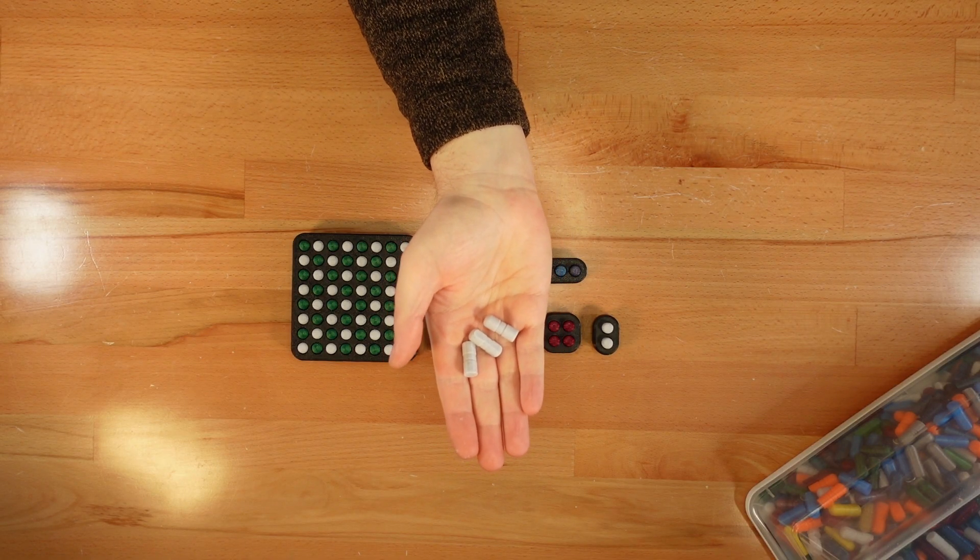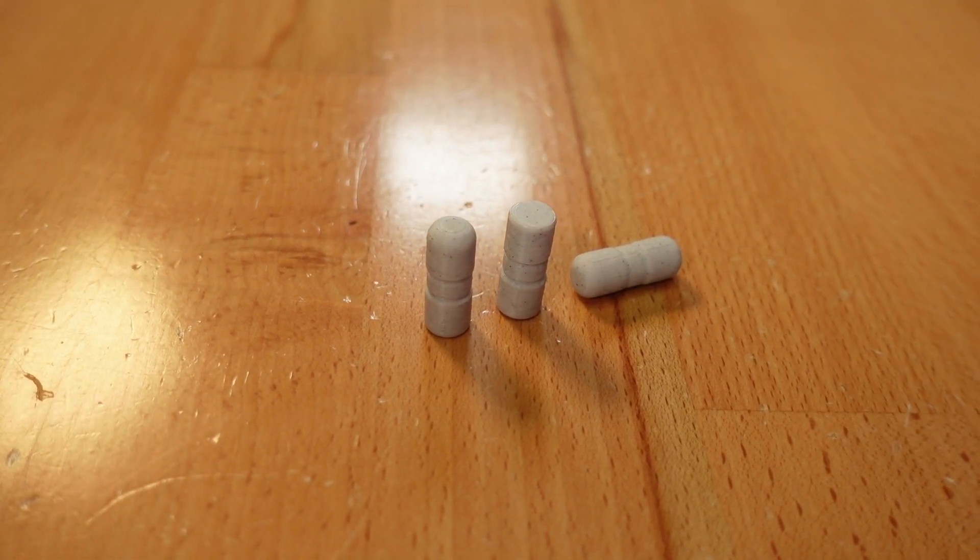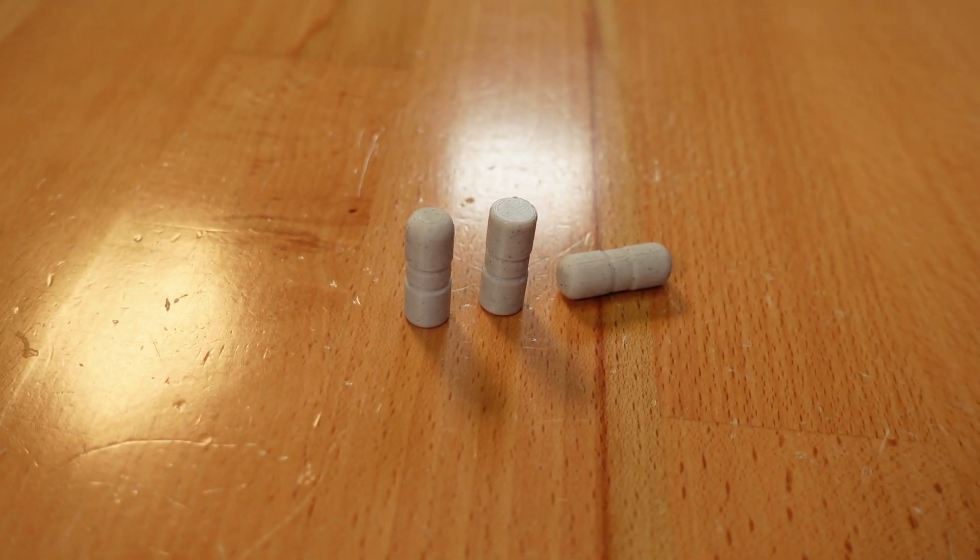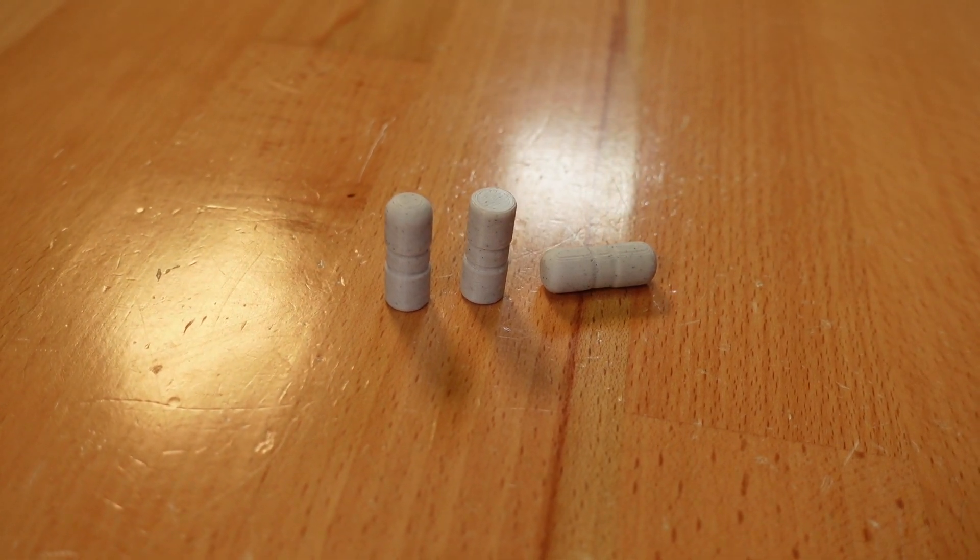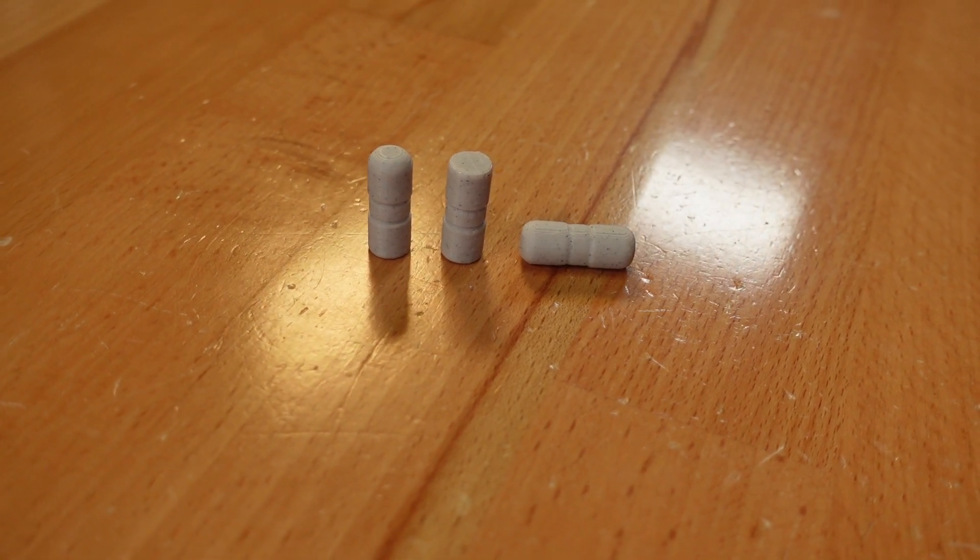The buttons are available in three styles. The default is round on top and flat on the bottom. Or if you prefer, it's available with two flat ends or two round ends. That last option needs to be printed on its side though to keep it from falling over.